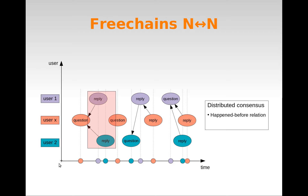Besides causality, the protocol also adopts a best effort strategy. When a node posts new content, it will point — with dashed lines — to content that it already saw, even if there is no semantic relation between them. Even so, there will still be cases in which posts are delivered in different orders, which means FreeChains only guarantees a partial order of events.